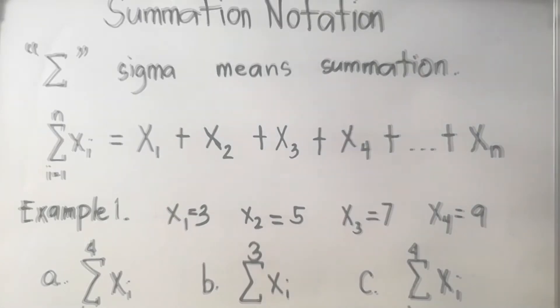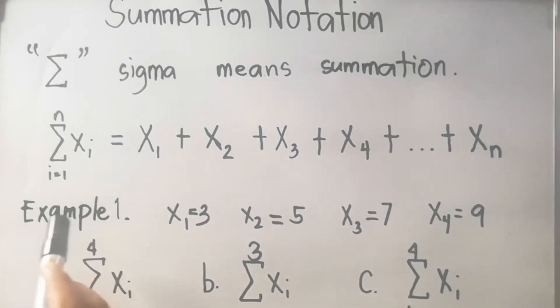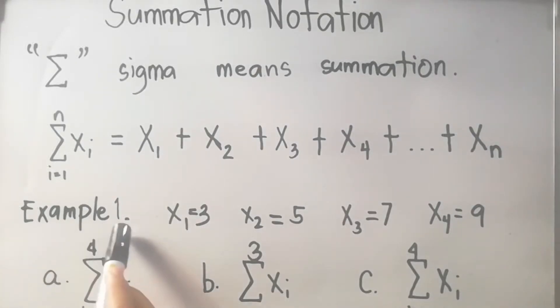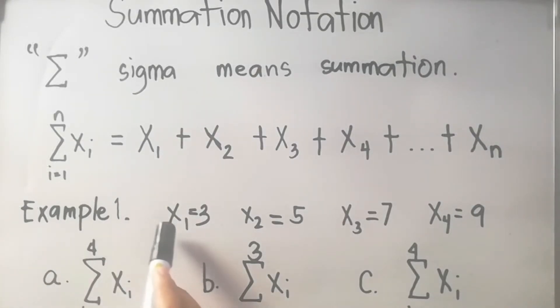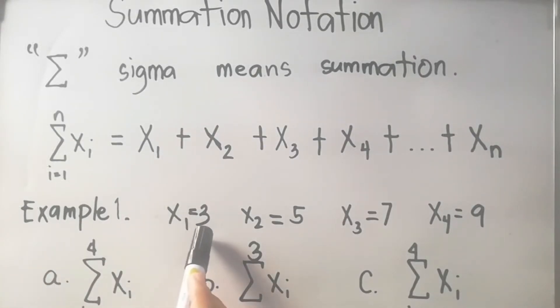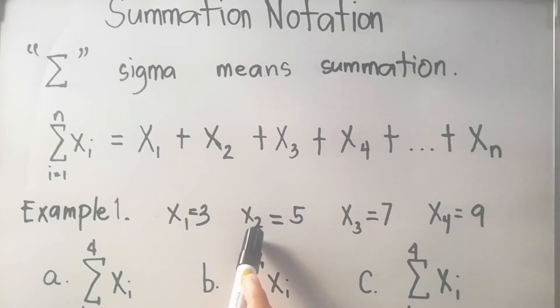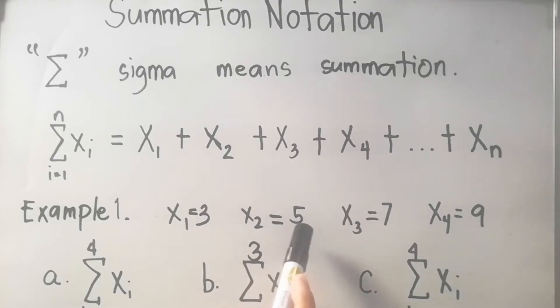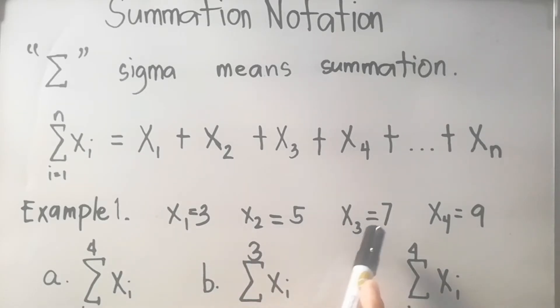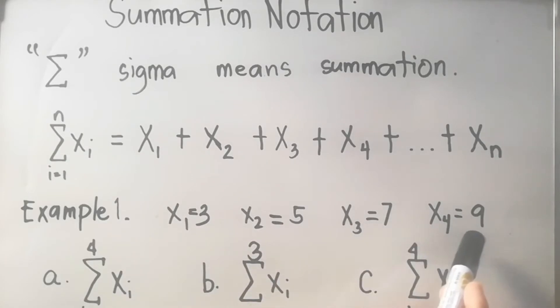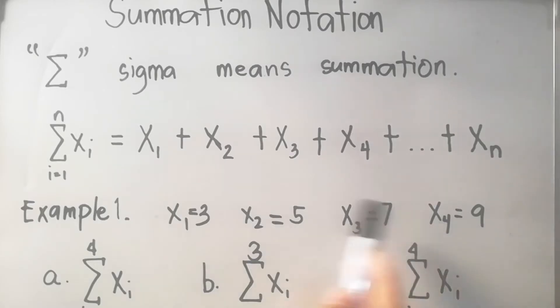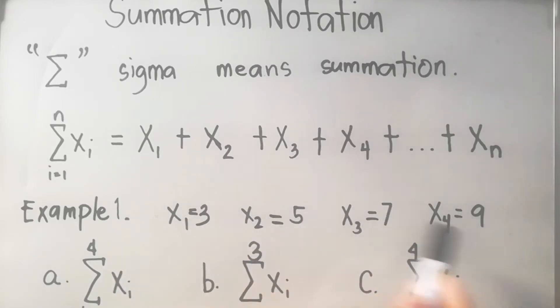Let us have Example 1, where x sub 1 is equal to 3, x sub 2 is equal to 5, x sub 3 is equal to 7, and x sub 4 is equal to 9. So we have four values of x.